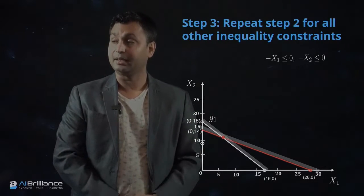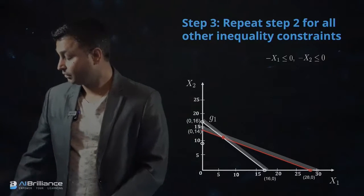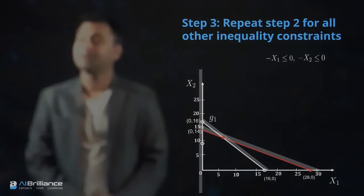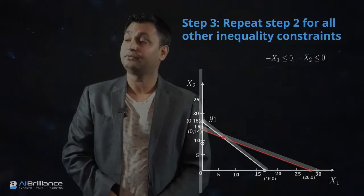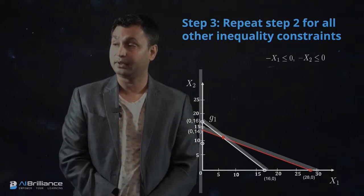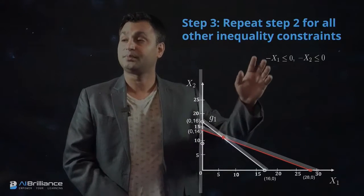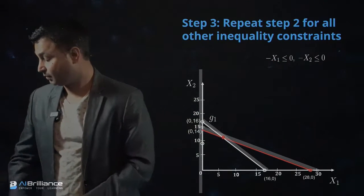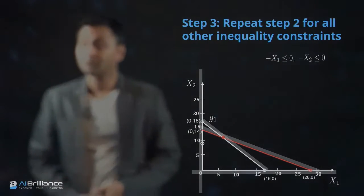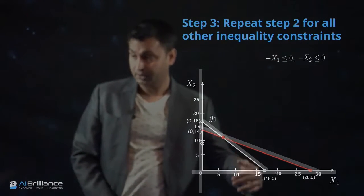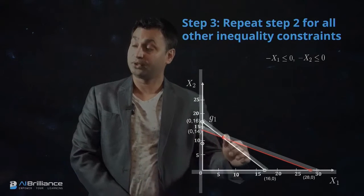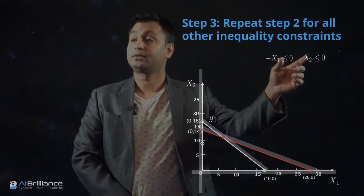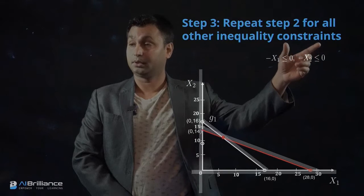We shade out the regions violating these constraints on the plot. The left-hand side of the X2 axis is shaded out, representing the constraint X1 ≥ 0. Similarly, the bottom portion of the plot is shaded out, representing the constraint X2 ≥ 0.